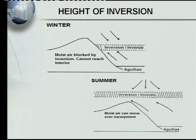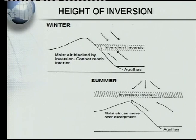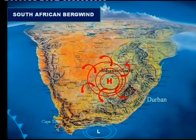An important question is: why do we only get line thunderstorms during the summer? It has to do with inversions. During winter, the inversion is below the escarpment, so the warm air cannot rise over it. During summer, the inversion lifts, allowing the moist air to go over the escarpment, join with the cold air, be forced to rise, and line thunderstorms occur.